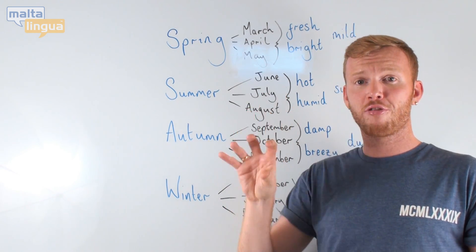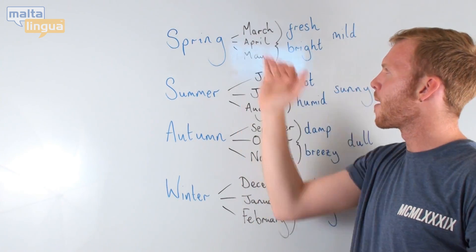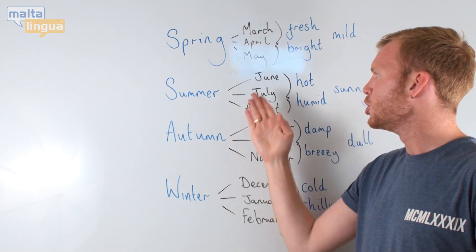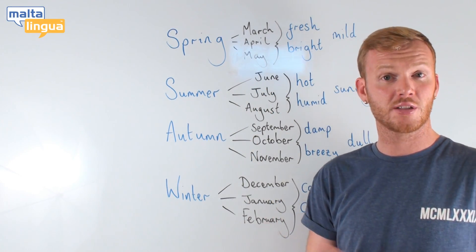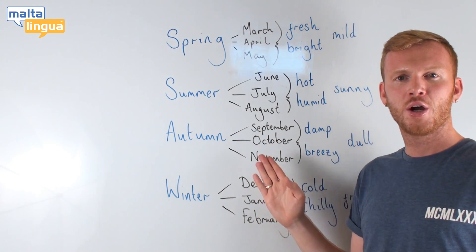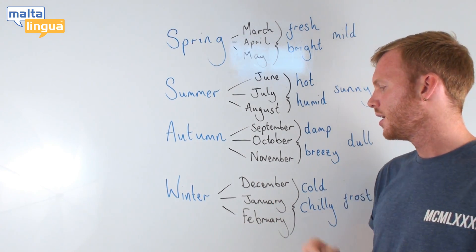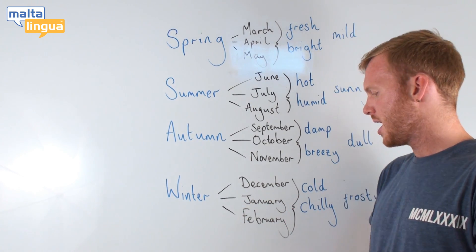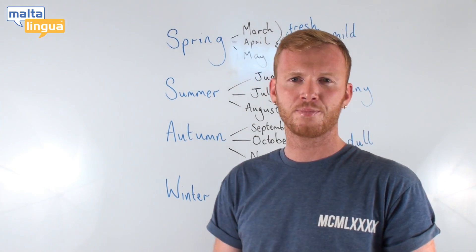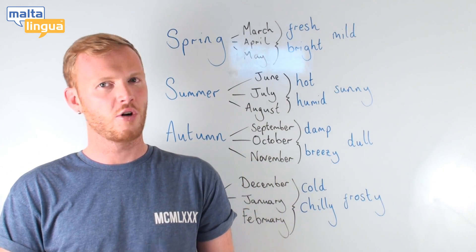We generally categorize the 12 months of the year into three months per season. The three spring months are March, April, and May. Summer is June, July, and August. Autumn is September, October, and November. And finally, winter is December, January, and February. So — spring, summer, autumn, and winter.